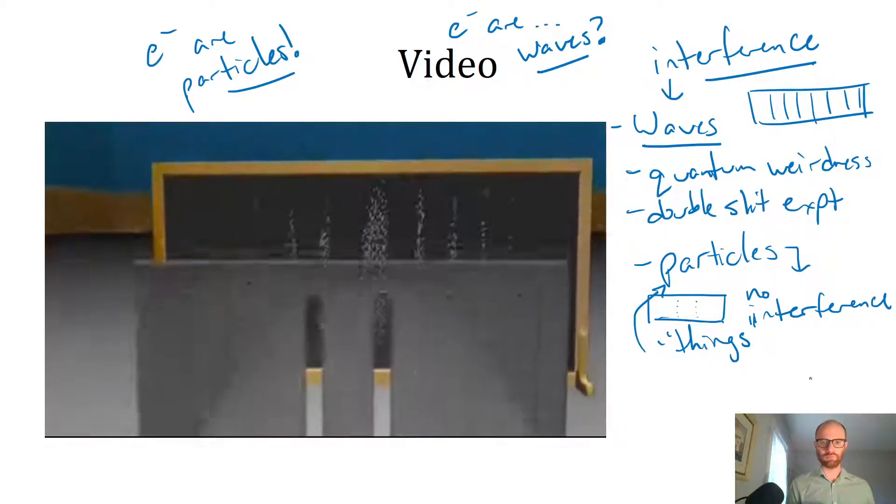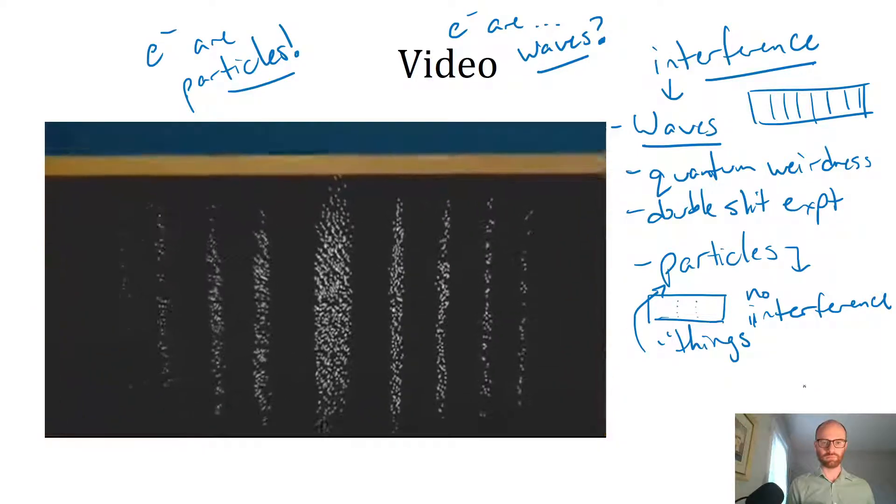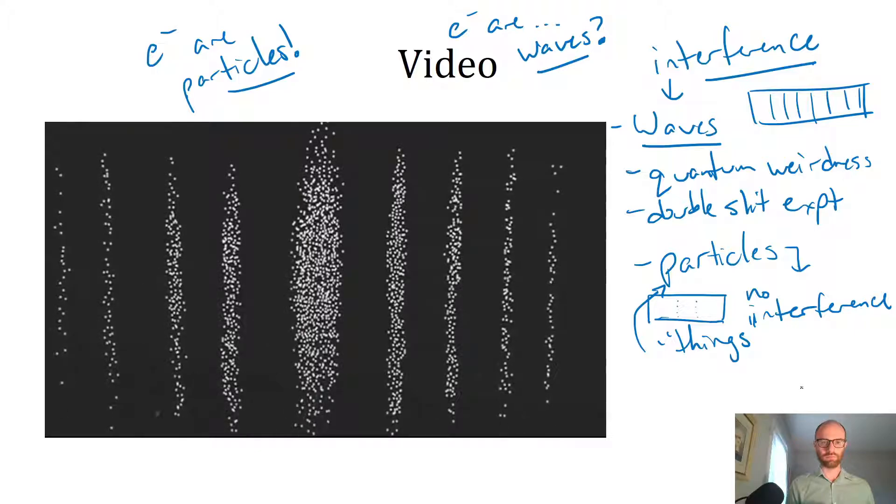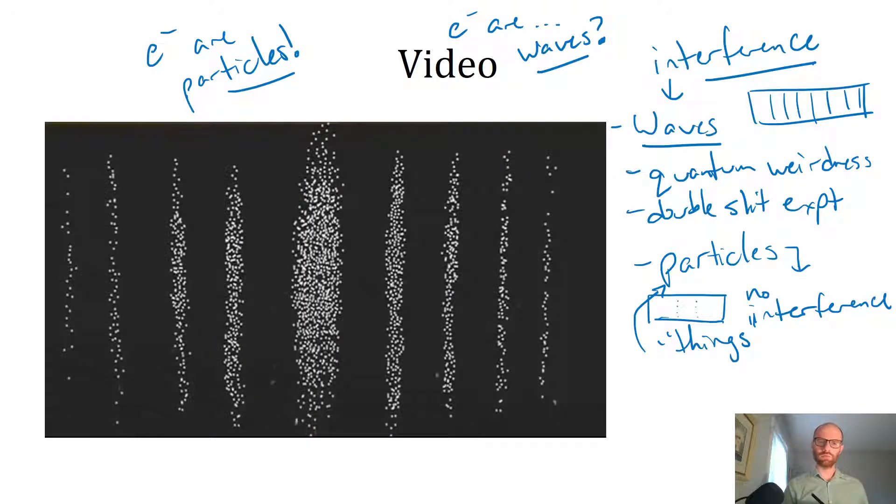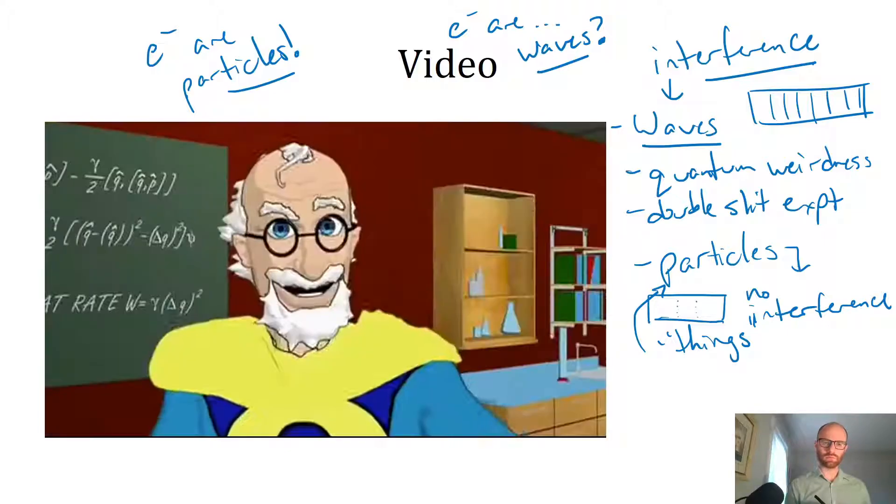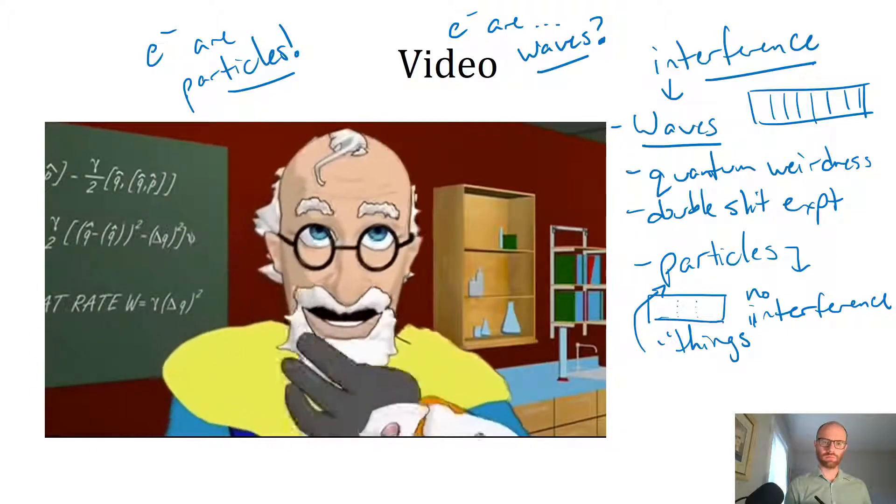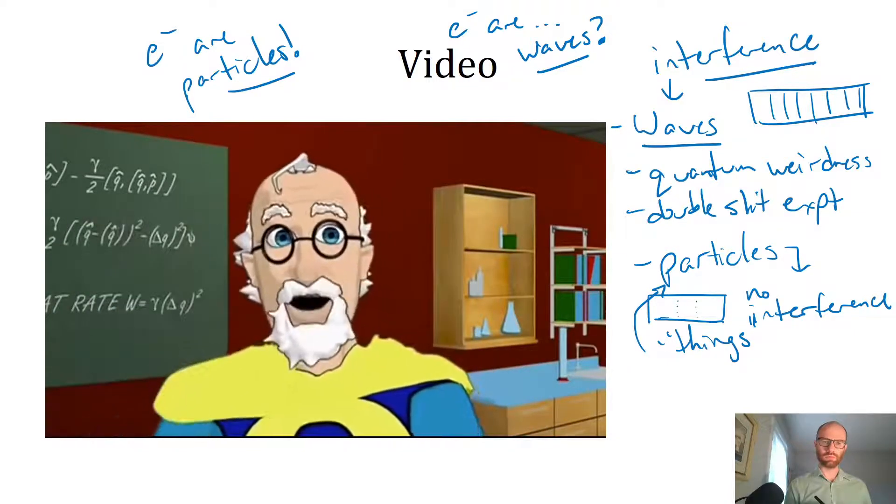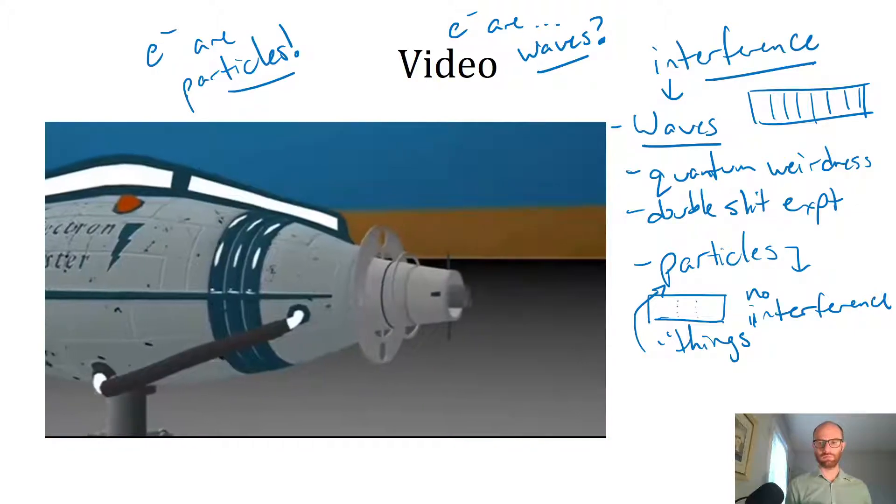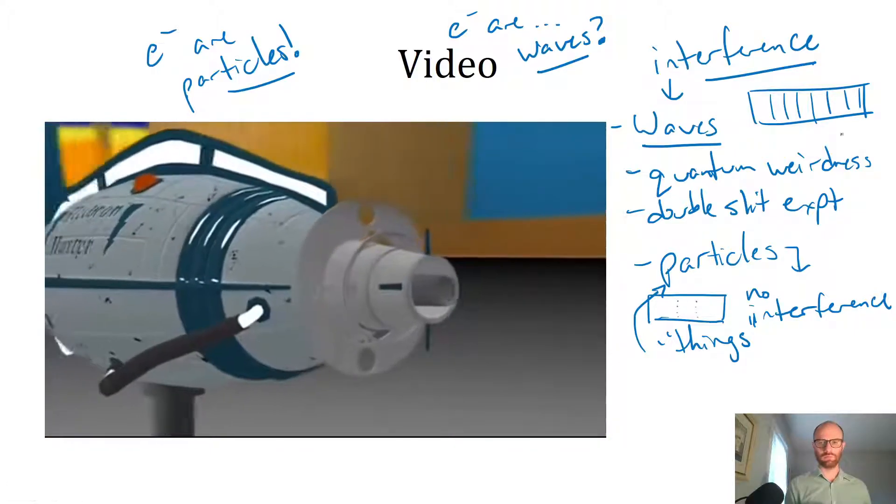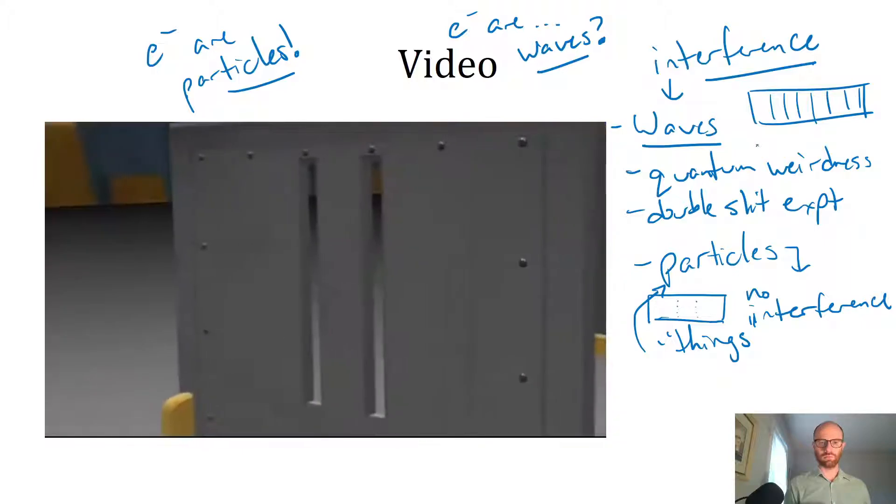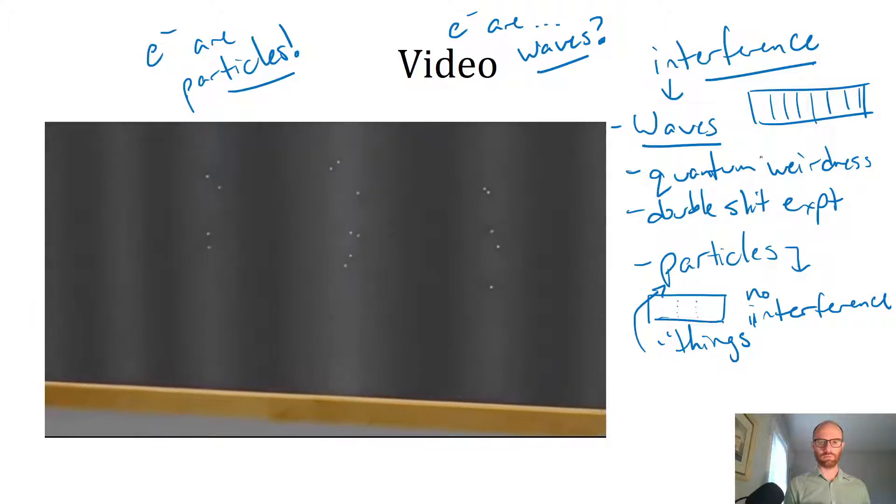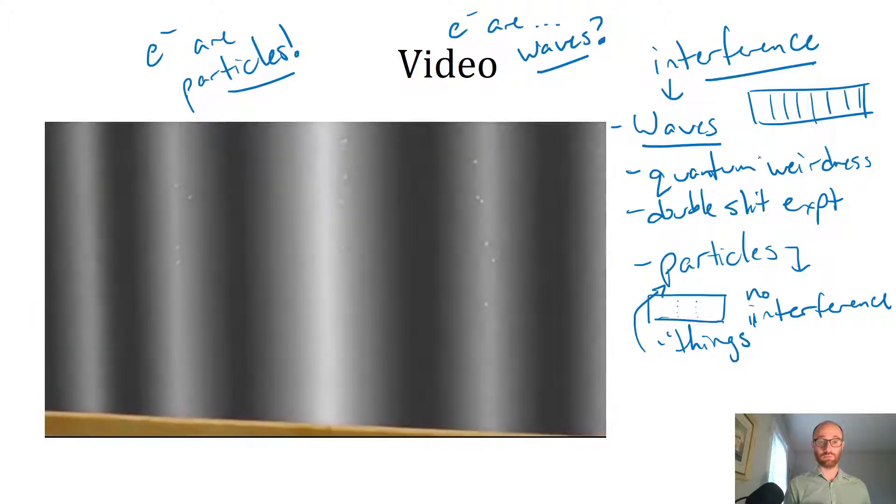We fired electrons, tiny bits of matter, through, but we get a pattern like waves, not like little marbles. How could pieces of matter create an interference pattern like a wave? It doesn't make sense. But physicists are clever. They thought maybe those little balls are bouncing off each other and creating that pattern, so they decide to shoot electrons through one at a time. There is no way they could interfere with each other. But after an hour of this, the same interference pattern is seen to emerge.